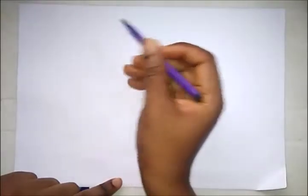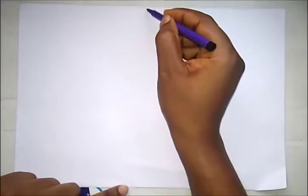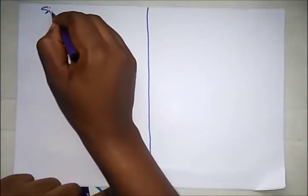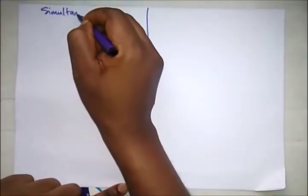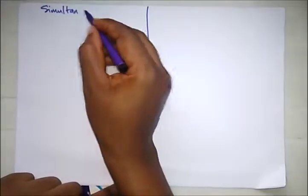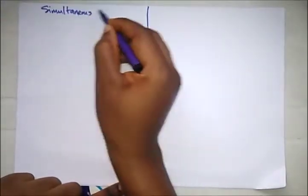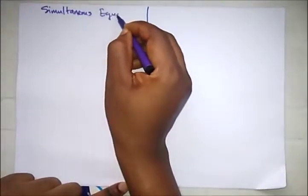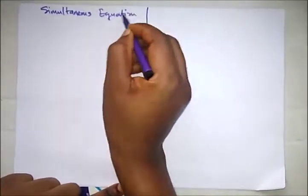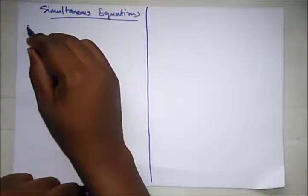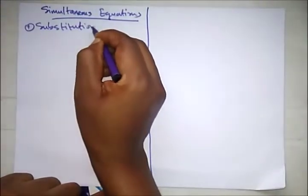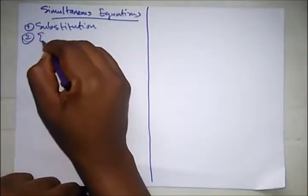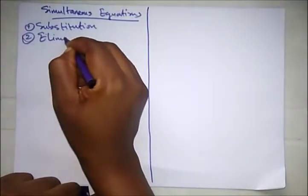Now there are two methods used in solving simultaneous equations. The first method is substitution, while the second method is elimination. Now we are going to treat an example here for us to further understand how to solve simultaneous equations using these two methods.